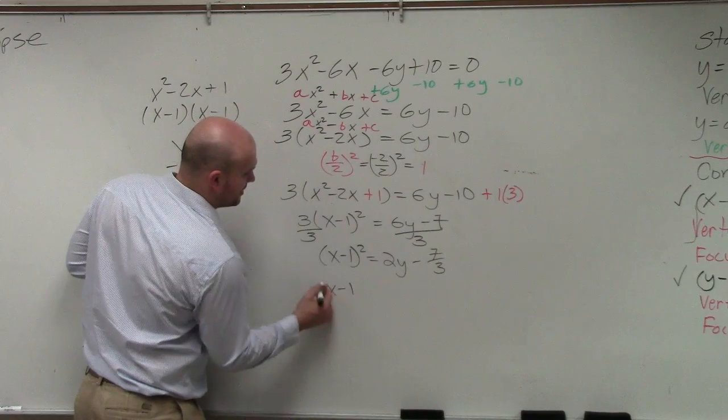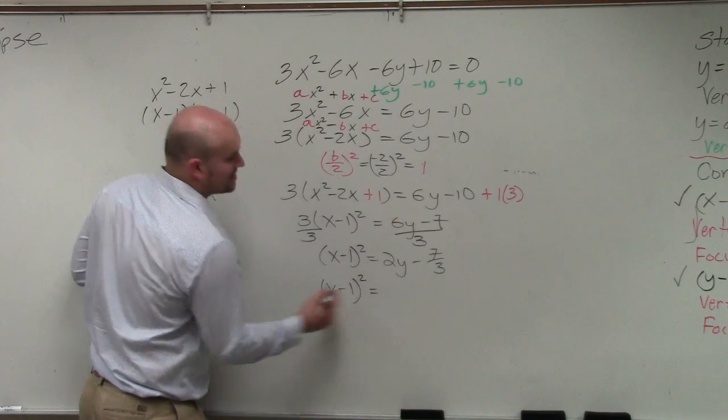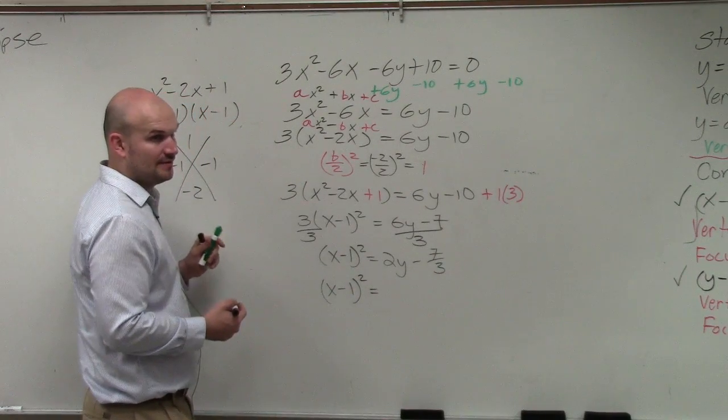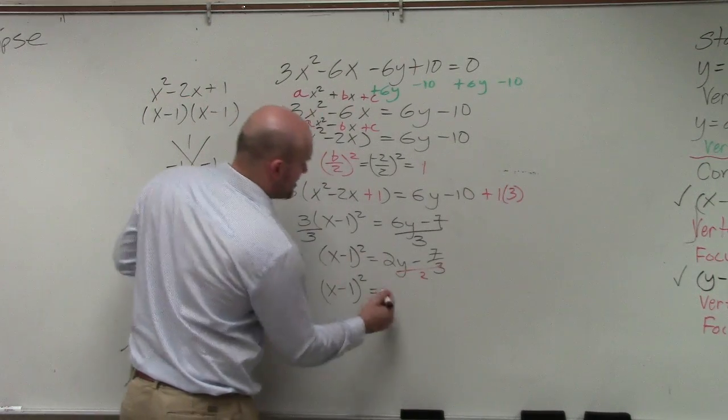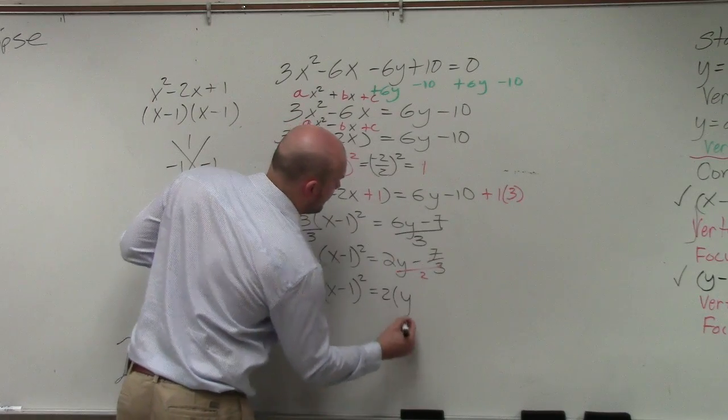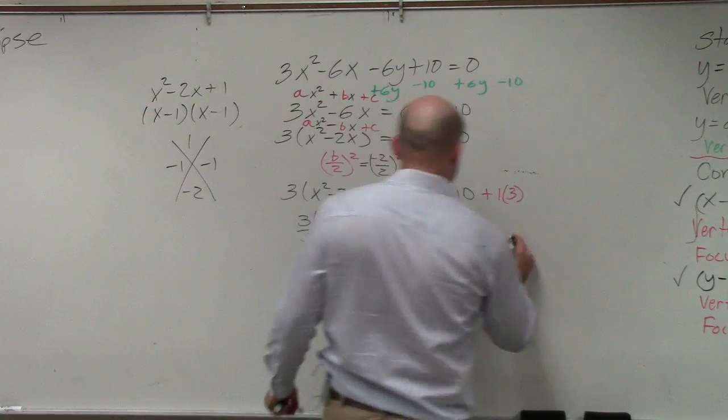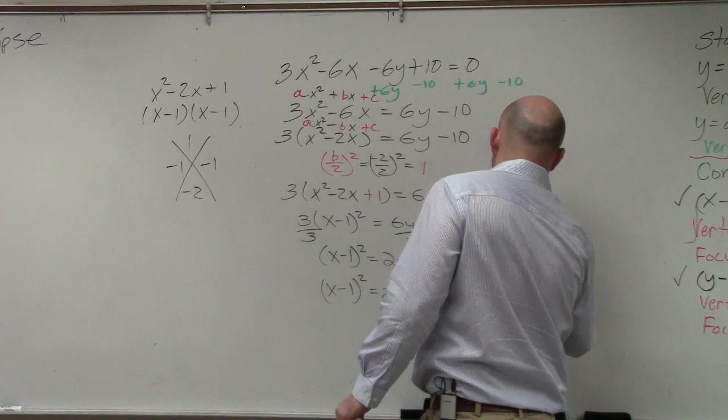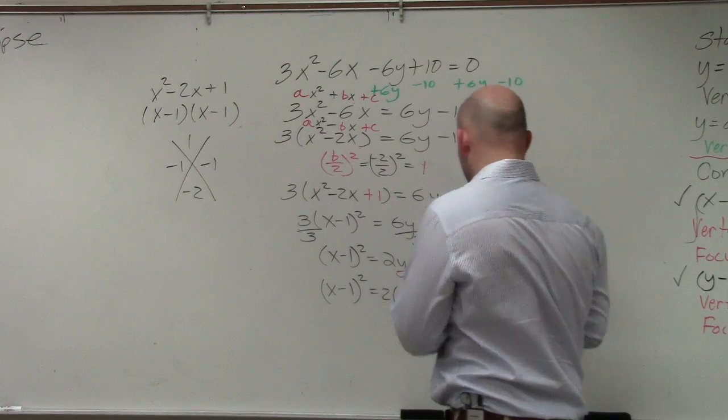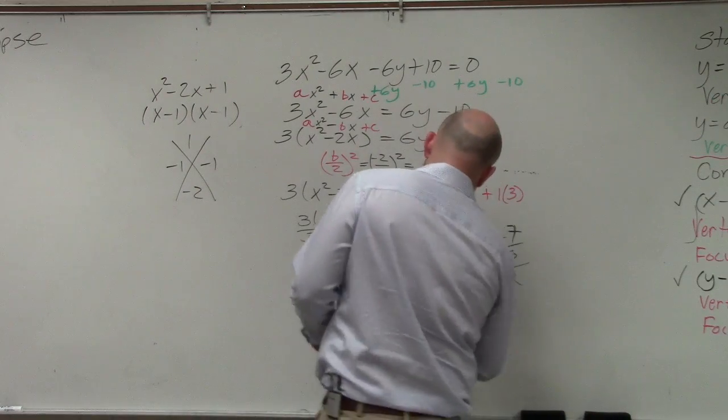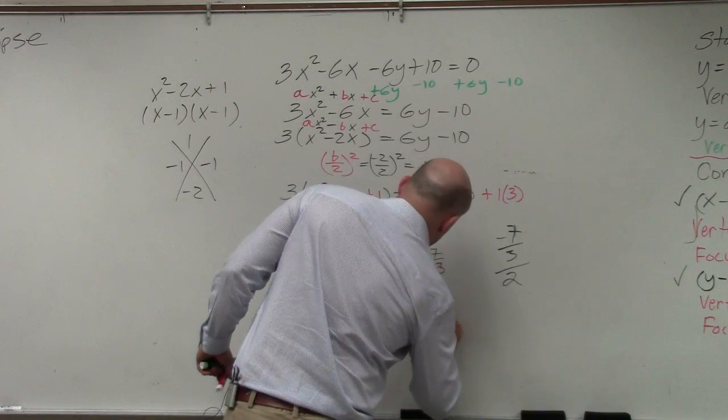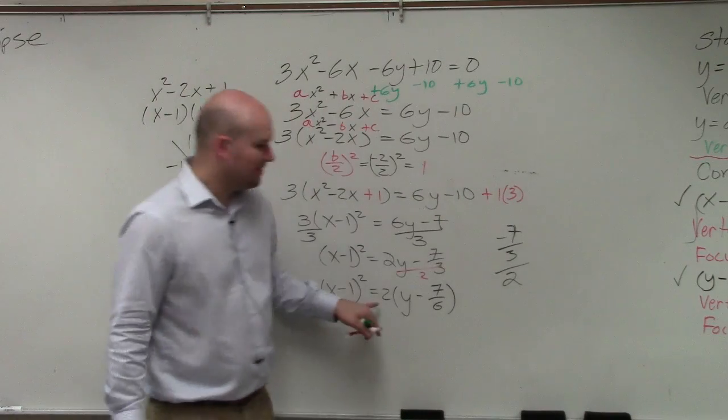So I do (x - 1). Factoring out is the same thing as like dividing by 2. Wouldn't you guys agree? So in reality I got to divide both of these by 2. So therefore I have 2(y - 7/3 divided by 2). That's going to be -7/6. There is your equation.